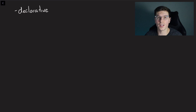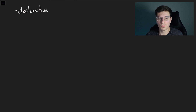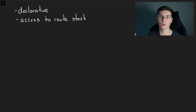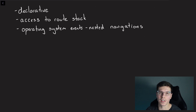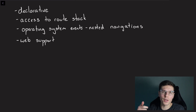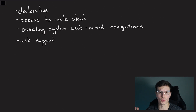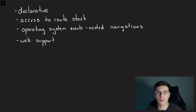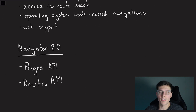Navigator 2.0 solves four major problems. First is declarative versus the imperative Navigator 1.0 — most of the Dart language is written in a declarative way, so it makes sense for the navigator to be declarative as well. It also gives you access to the route stack so you can manipulate all your routes. It fixes problems with OS events especially with nested navigation. And lastly, it now has web support including the back and forward buttons.